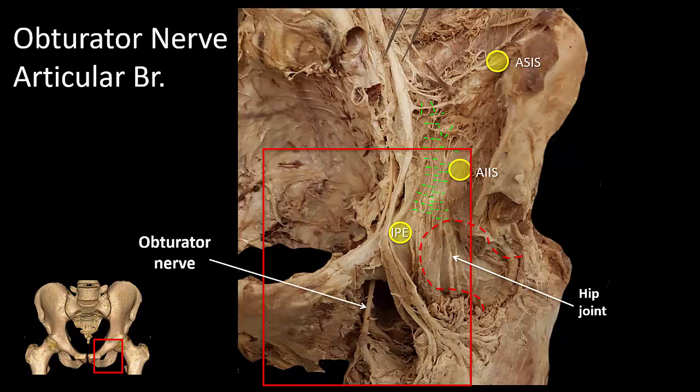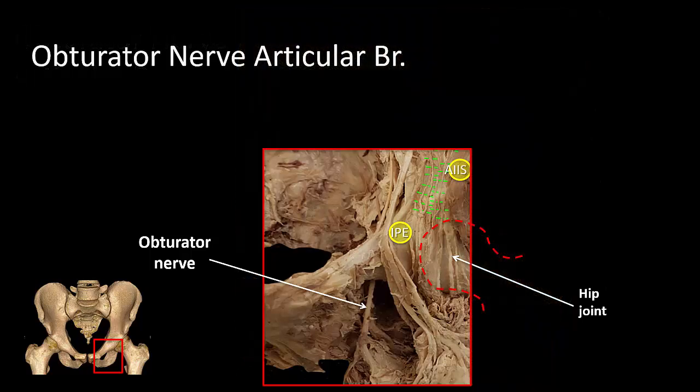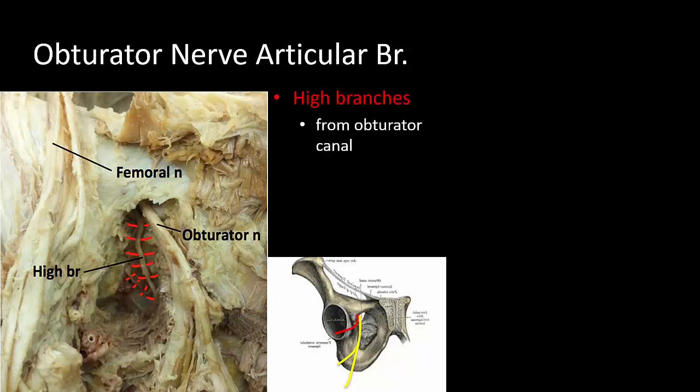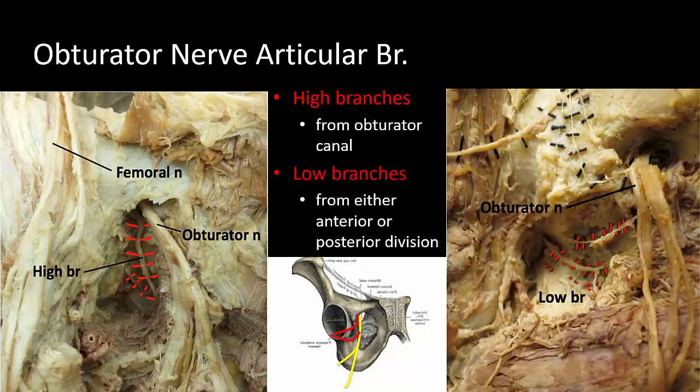The obturator nerve descends in the pelvis medial to the psoas muscle and emerges through the obturator foramen. High articular branches arise from the obturator nerve within the obturator canal, and low branches arise distal to the nerve's exit and its division into anterior and posterior divisions. These articular branches reflect laterally to innervate the anterior medial hip joint capsule.